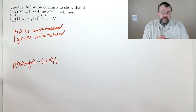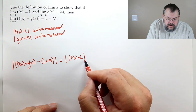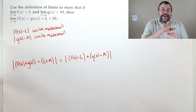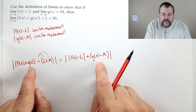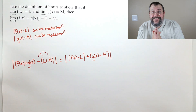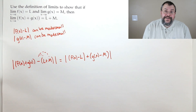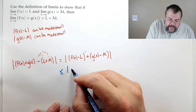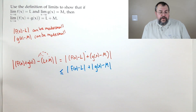Our goal: make |f(x)+g(x) − (L+M)| less than epsilon. Rearranging, this equals |(f(x)−L) + (g(x)−M)|. By the triangle inequality, this is ≤ |f(x)−L| + |g(x)−M|. We want both pieces together to be less than epsilon, so we give each half: we want each to be at most ε/2.